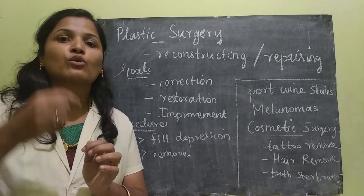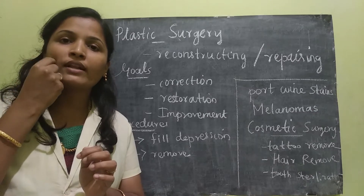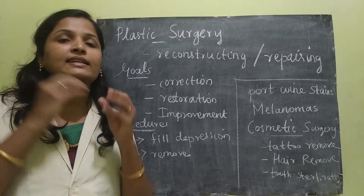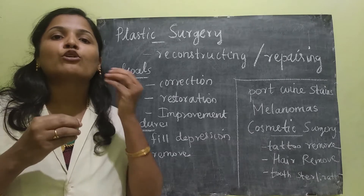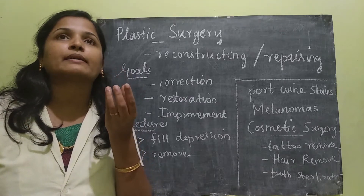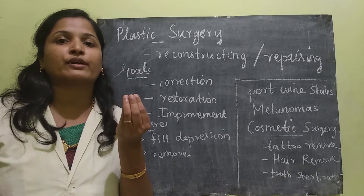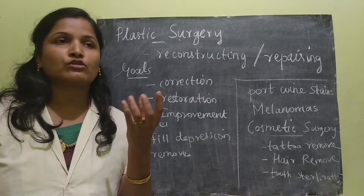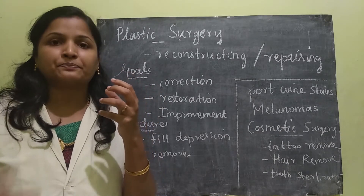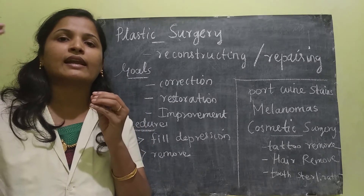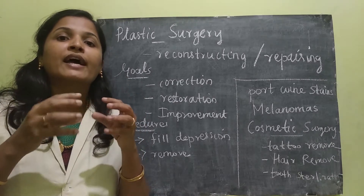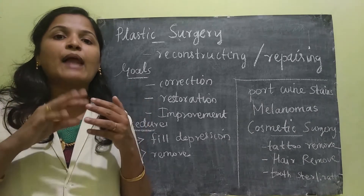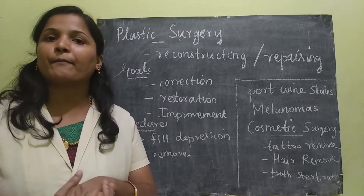How is tooth sterilization done? The laser is applied over the decayed tooth. We know the decayed particles contain more water molecules compared to good teeth. When the laser strikes the water molecules, they get heated and evaporated, and because of that, sterilization happens.